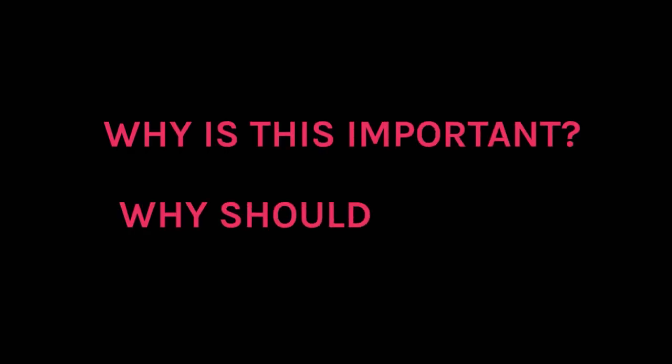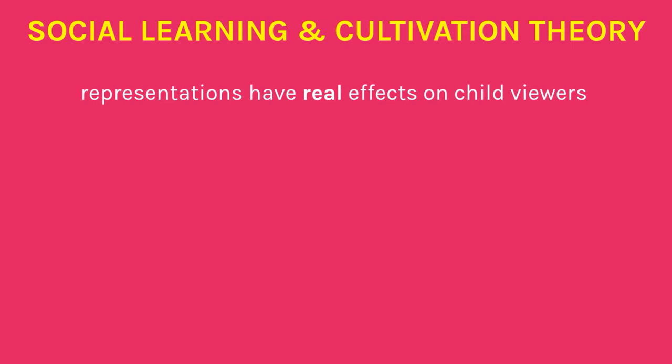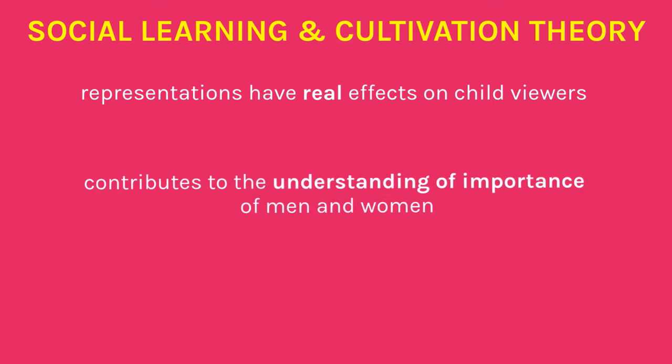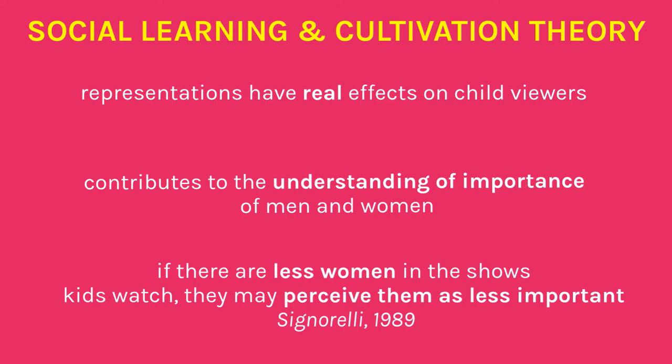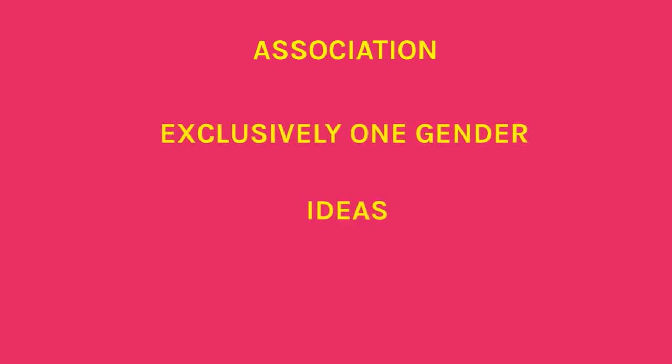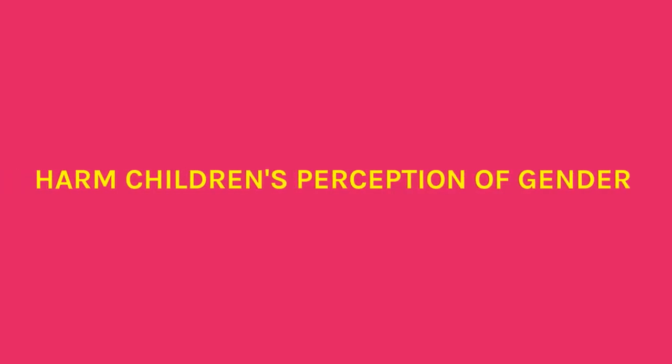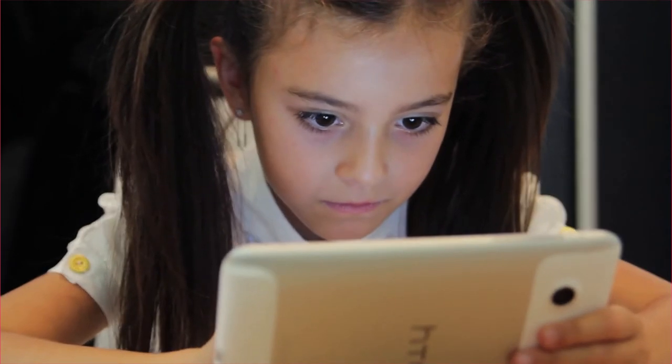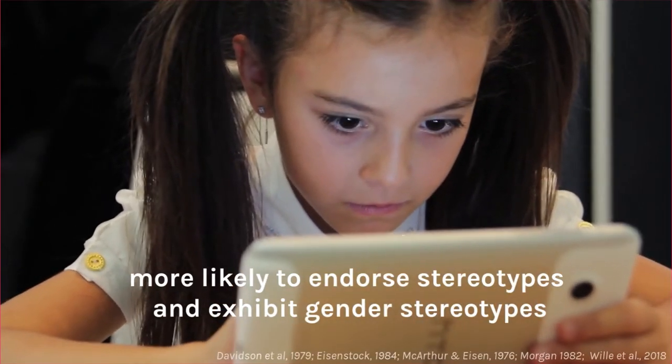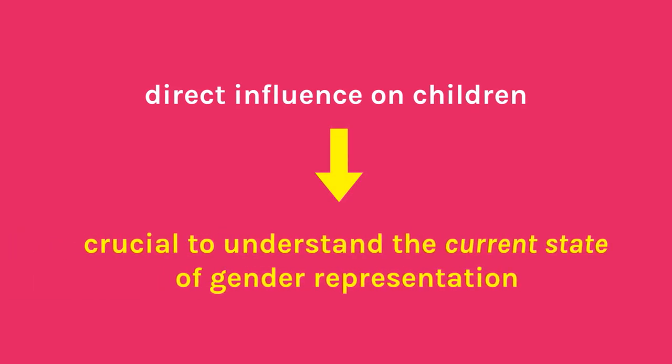But why is this so important? Why should we care? In line with the theories discussed earlier, these representations can have real effects on child viewers. The abundance of male characters can contribute to children's understanding of the importance of men and women — if there are repeatedly fewer female characters, children may begin to view women as less important. And in terms of gender stereotypes, viewing these representations can lead children to view them as true, believing all women are emotional or all men are aggressive. This can harm children's perceptions of gender and gender roles. A positive relationship between viewing television and endorsing gender stereotypes has already been found, and adolescents who view gender stereotypes in shows are more likely to endorse and exhibit those stereotypical behaviors. As this representation directly influences children, it is crucial to understand the current state of gender representation in children's television.